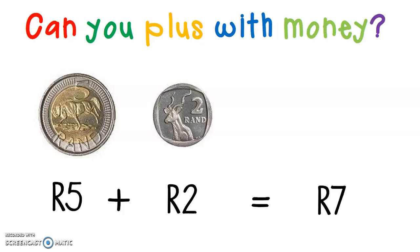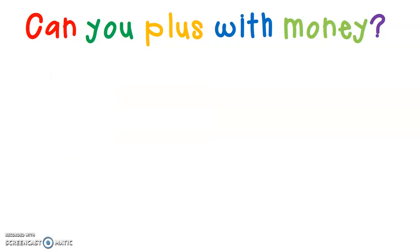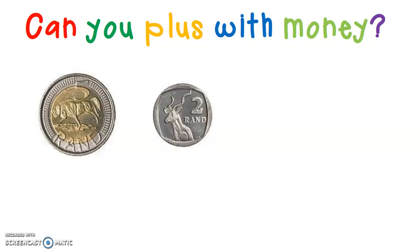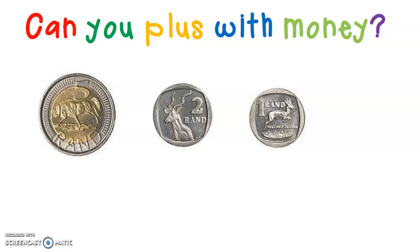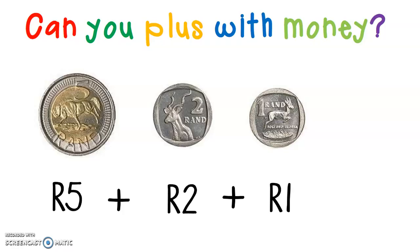Do I get a 7 Rand coin? No, I don't. Here I have a 5 Rand coin, a 2 Rand coin, and a 1 Rand coin. Can you quickly add those up in your head? 5 Rand plus 2 Rand plus 1 Rand equals — quickly count: 1, 2, 3, 4, 5, 6, 7, 8. The answer is 8 Rand. 5 Rand plus 2 Rand plus 1 Rand equals 8 Rand, and we also don't have an 8 Rand coin.